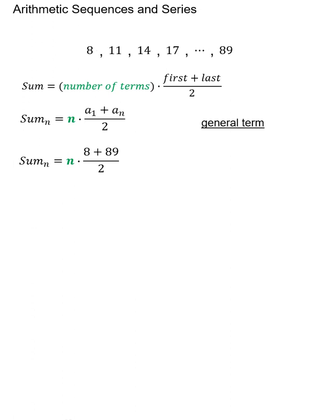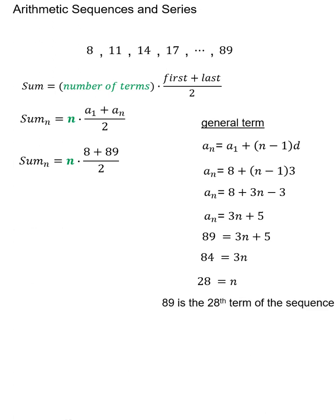Short of having to count them we could pretend this is a sequence and use the general term formula. Knowing a₁ and d, we could then simplify and plug in the last term or 89 for the nth term. This would allow us to find what n is. Using some middle school basic solving techniques we'll find out that n is 28 and that therefore the last term is the 28th term in this sequence, and we can therefore plug in 28 for n.